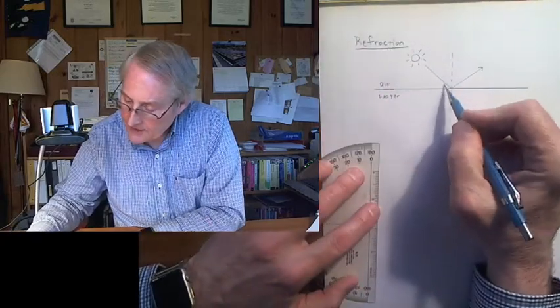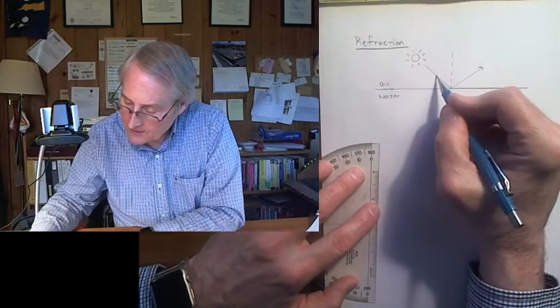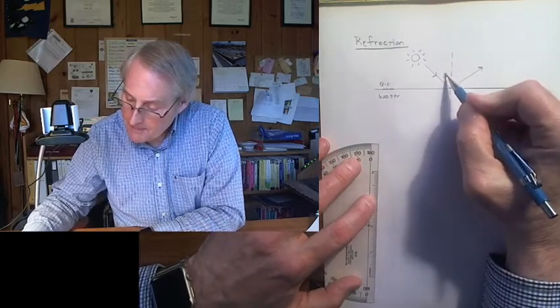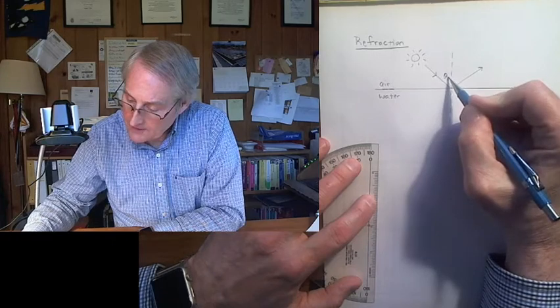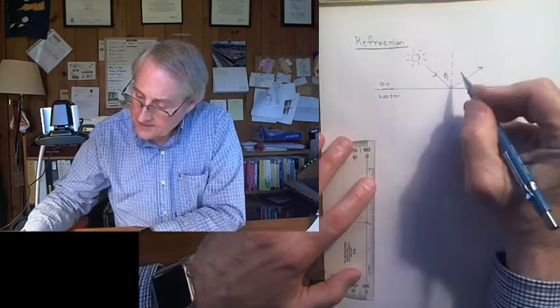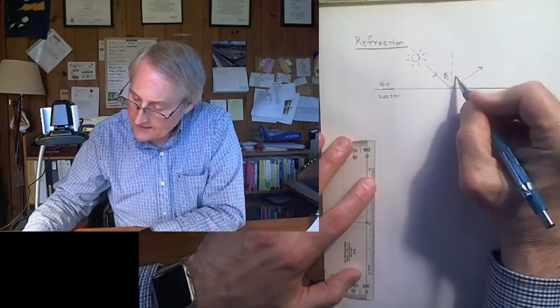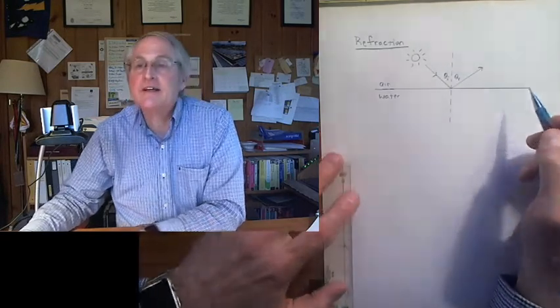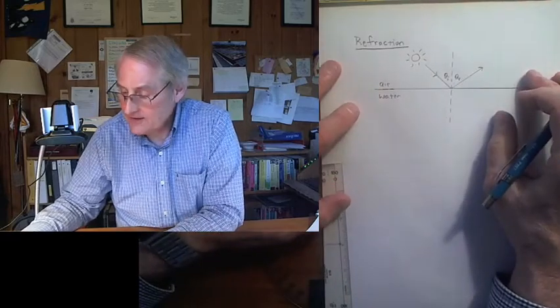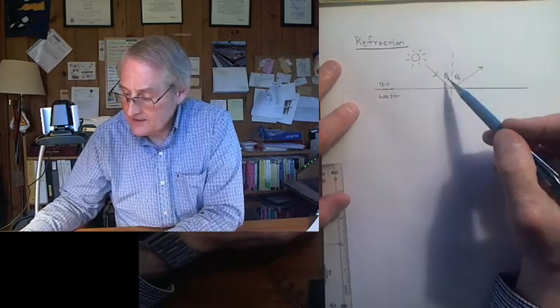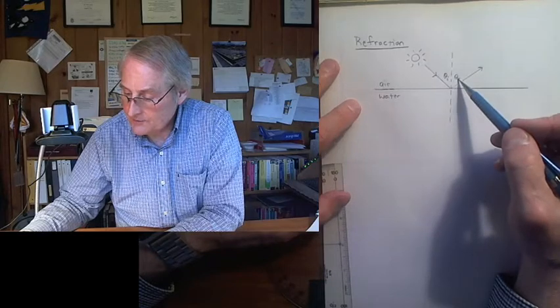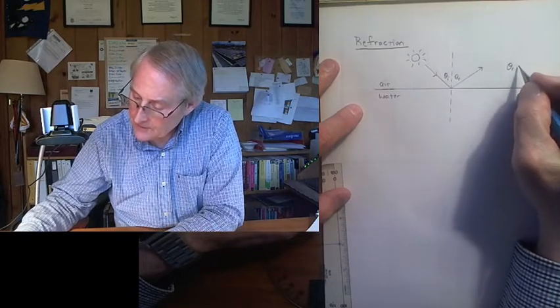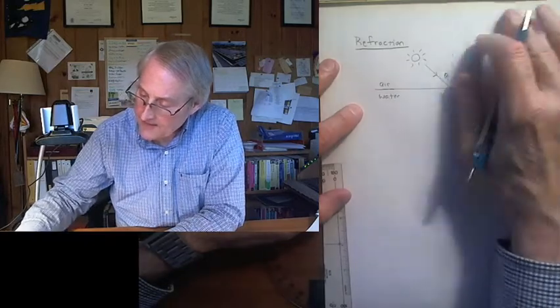And this angle here then, this angle from, here comes the sunlight. The angle from normal, I'll call it theta sub i for incident. And then the sunlight gets reflected, and that is theta sub r for reflected. And it turns out that the angle of incidence is equal to the angle of reflection, or the angle of reflection is equal to the angle of incidence. Theta r equals theta i.